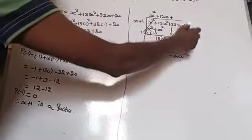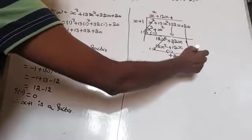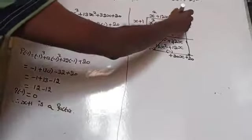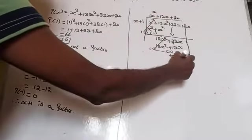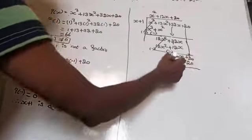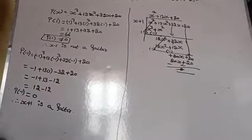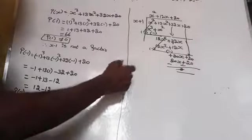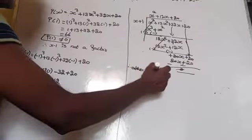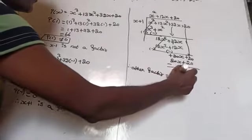Bring down +20. We have 20x + 20. Then 20x ÷ x = 20, and 20(x + 1) = 20x + 20. The remainder is 0. Therefore the other factor is x² + 12x + 20.